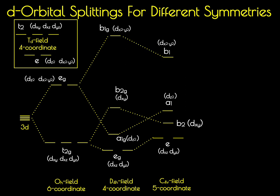In the C4v field, we've taken the Oh molecule and removed just one of the axial ligands — one ligand along the z-axis. This creates a crystal field splitting diagram where the dx²-y² remains highest in energy. The dz² orbital has come up in energy relative to the D4h field, because we've added an axial interaction. To compensate, the B2 orbital drops in energy, while the E orbitals (dxz and dyz) go up in energy relative to D4h because of the added z-axis component.